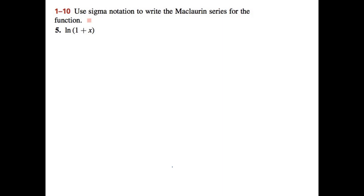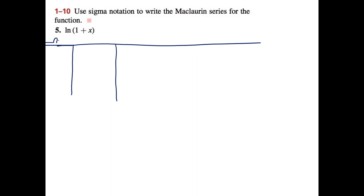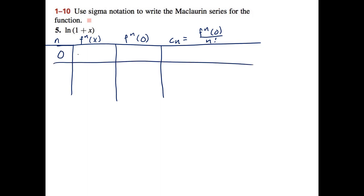To find the Maclaurin series, make a table with columns: n, the nth derivative of f(x), and that derivative evaluated at 0. Use c_n = f^(n)(0) / n!. For ln(1+x): when n=0, f(0) = ln(1) = 0, so c₀ = 0.